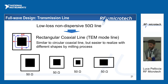The physical line we chose is a rectangular coaxial line that supports a TEM mode. This transmission line is very similar to a circular coaxial line, but easier to realize with a milling process, and it can be realized in different shapes with different shape factors while maintaining the same characteristic impedance. You can see in the picture the behavior of the E field and H field — confirming the TEM mode.